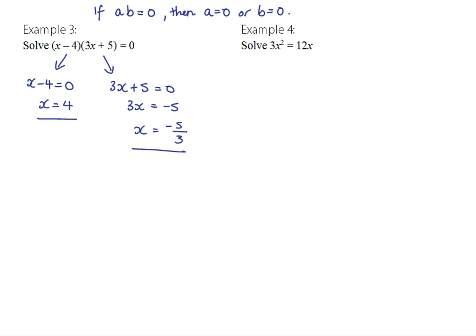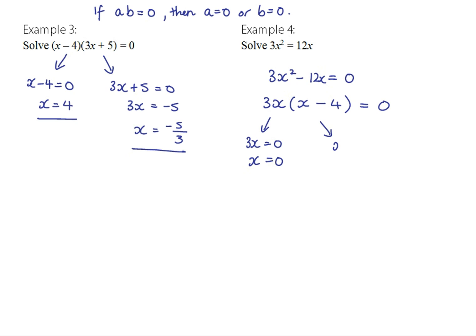Same process: make one side equal to zero, factorize, use the null factor law. Making one side equal to zero gives us 3x² − 12x = 0. We factorize — the common factors are 3 and x — leaving 3x(x − 4) = 0. The null factor law tells us either 3x = 0, so x = 0, or x − 4 = 0, so x = 4. Please be careful about wanting to divide by the unknown — you should never do it.